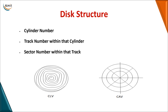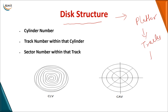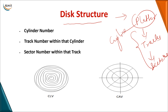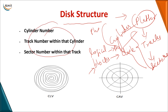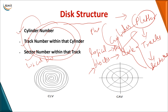Now looking at the disk structure: a magnetic disk has platters, platters are divided into tracks, and tracks are divided into sectors. The combination of platters at a particular radius forms a cylinder. Since this is a physical location, we must map logical addresses to physical addresses. Logically on the disk, we call units blocks. A logical block must be mapped to the physical structure using the cylinder number, track number within the cylinder, and sector number within the track.